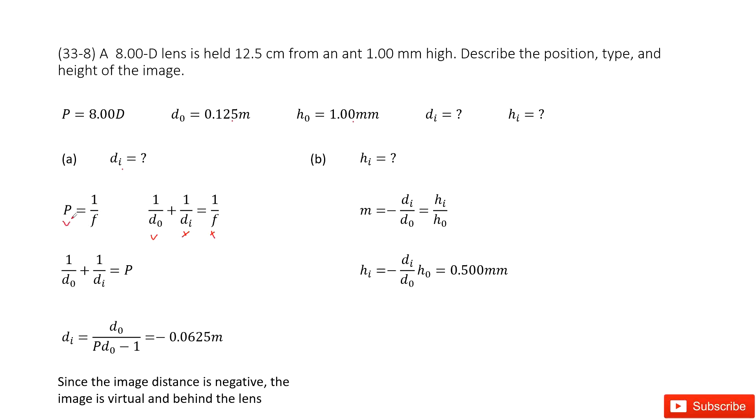So now this one is given. So from this one, we can get 1 over f. Now we replace 1 over f as P. So from this equation, this one is given, P is given, dI is not given. Converting this equation, we can get function for dI. Input all the given quantities to get answer zero point 0625m. Since the image distance is negative, the image is virtual and behind the lens.